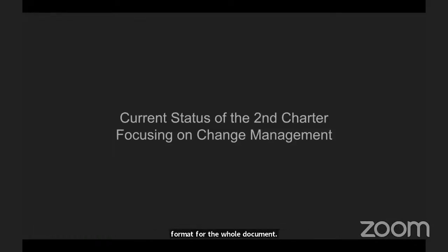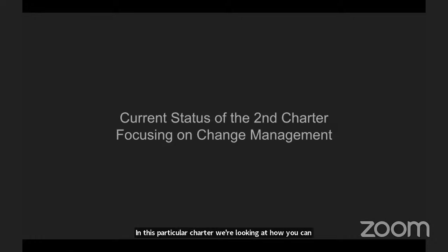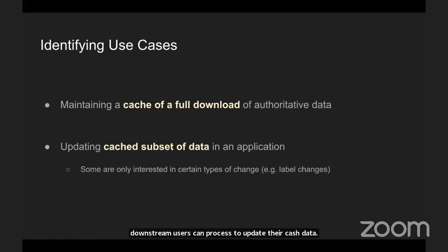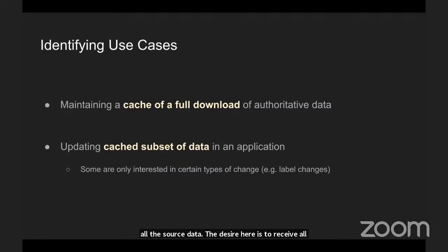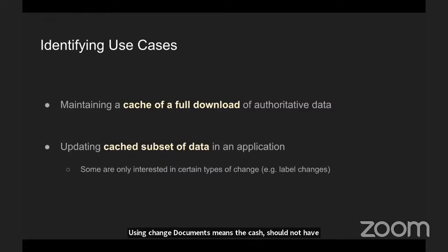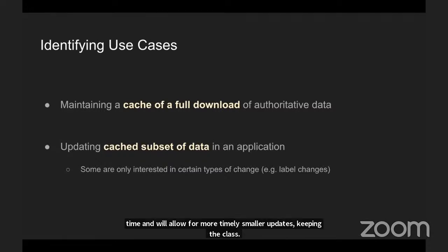Now I'm going to talk about the second charter. In this charter, we're looking at how you can express change management in documents that authority data providers can create, and downstream users can process to update their cached data. We identified two primary use cases. The first is maintenance of a cache that includes a full download of all the source data. The desire is to receive all data changes so the cache can be modified to match the source. Using change documents means the cache should not have to go through that full download process again — it processes changes incrementally, saving processing time and allowing for more timely, smaller updates, keeping the cache closer to real-time synchronization with the source data.